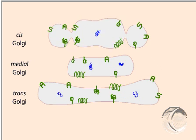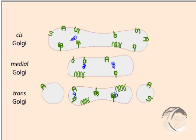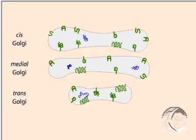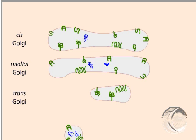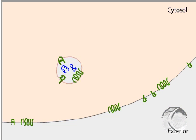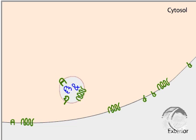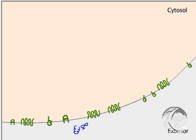The maturation process includes retrograde vesicular transport of resident Golgi proteins. Proteins destined for secretion after modification in the Golgi are transported from the trans Golgi to the plasma membrane. When the membranes fuse, the proteins are released into the extracellular space.